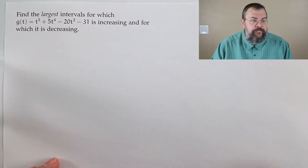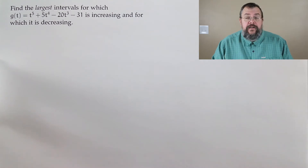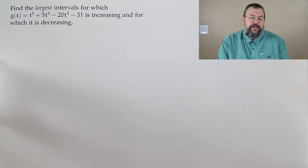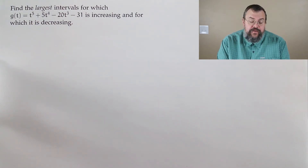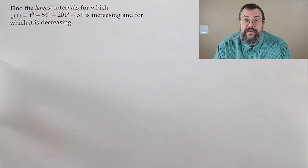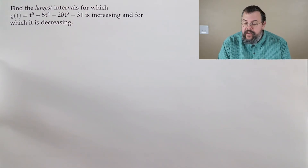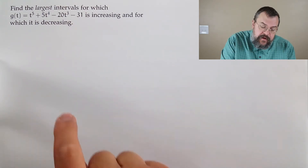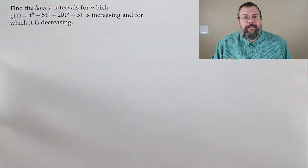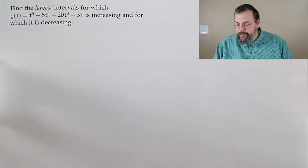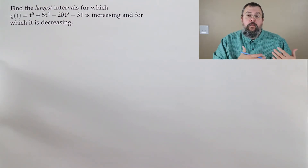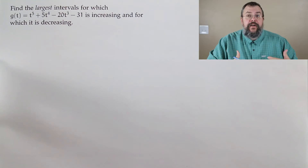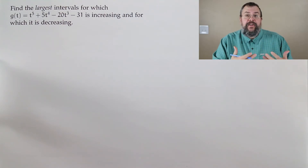The next problem: find the largest intervals for which g(t) = t to the 5th plus 5t to the 4th minus 20t cubed minus 31 is increasing, and for which it is decreasing. It's interesting that they specify the word 'largest.' We'll figure out what that means as we get into the problem. We're after our derivative, because that's what's going to tell us increasing and decreasing.